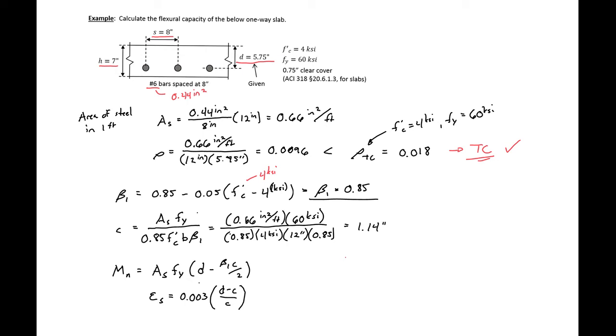And then we can plug this in and find our nominal moment capacity. So we have 0.66 inches squared per foot times 60 KSI, our yield strength of our steel, times our D, which was 5.75 inches minus 0.85 times 1.14 divided by 4 divided by 2. And we'll find our nominal moment to be 208 kip inches per foot.